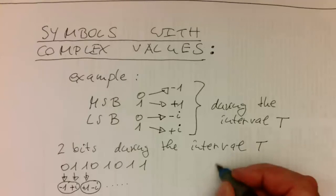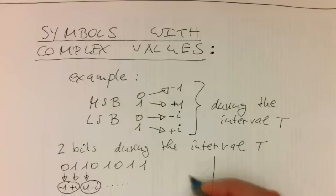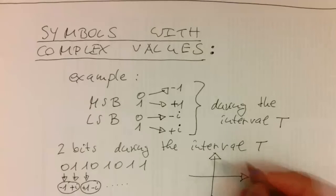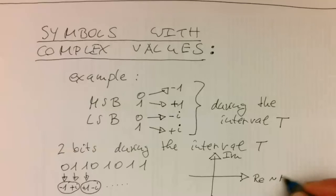Obviously this can be represented in the classical way: this is our real axis here and that's our imaginary axis. In this case, the real axis corresponds to the MSB and the imaginary axis corresponds to the LSB.